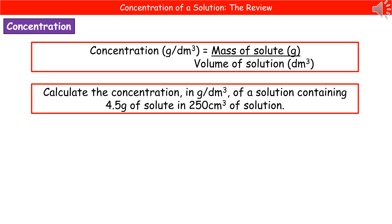The first one of these is to calculate the concentration in grams per decimeter cubed. And in order to do that, all we do is the mass of the solute in grams divided by the volume of the solution in decimeters cubed. So the type of question we could get for this one: calculate the concentration in grams per decimeter cubed of a solution containing 4.5 grams of solute in 250 centimeters cubed of solution.